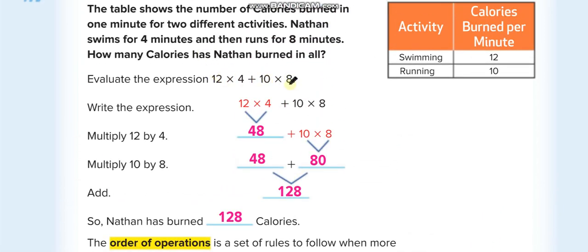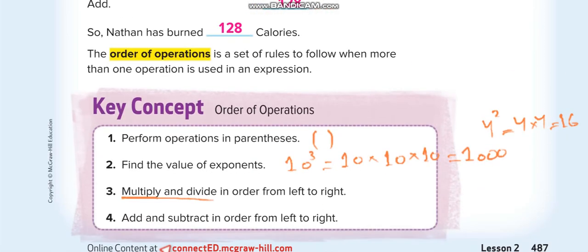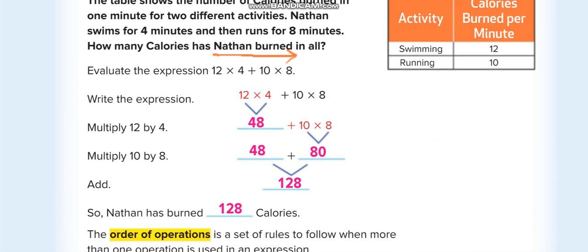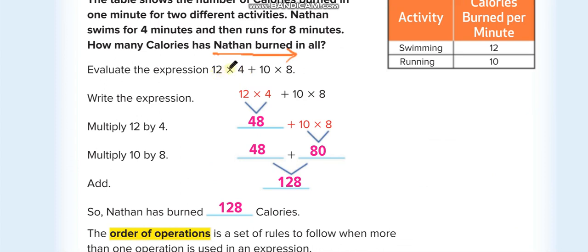Left to right means: in a numerical expression, you first finish all the multiplications and divisions. Then the fourth rule is to add and subtract in order from left to right. Finish all multiplications and divisions in your expression first, and only then do addition and subtraction.